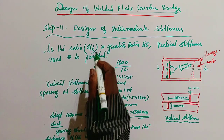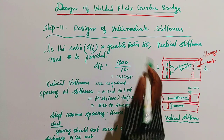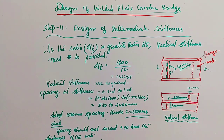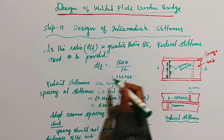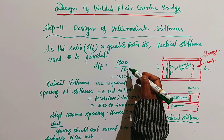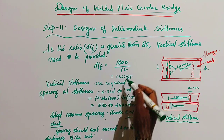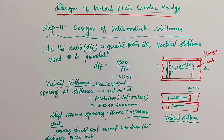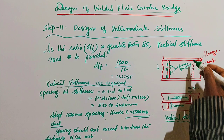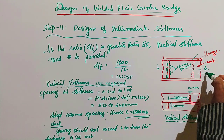Step 11: Design of intermediate stiffener. Since the ratio d/t is greater than 85, vertical stiffeners need to be provided. Checking: d/t = 1600 / 12 = 133, which is greater than 85, so vertical stiffeners are required. The figure shows the flange, the web, and the intermediate stiffener.